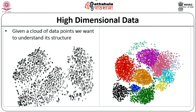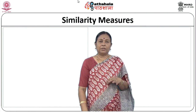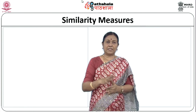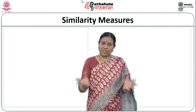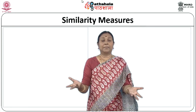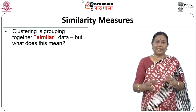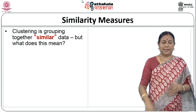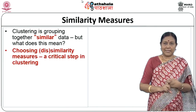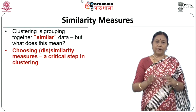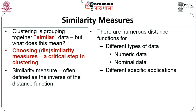Clustering is generally a very hard problem when dealing with high-dimensional data. Choosing similarity measures is a critical step — if you do not choose a good similarity measure, you will not get a good clustering. Similarity measure is often defined as the inverse of the distance function. There are numerous distance functions for different types of data: numeric data, nominal data, and application-specific distance functions.